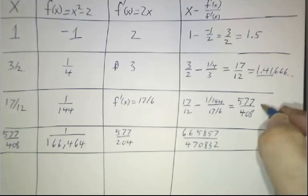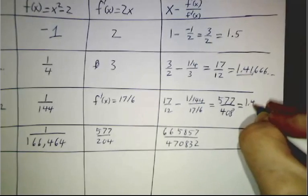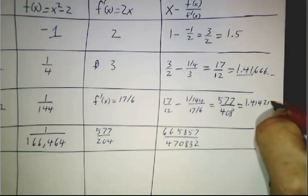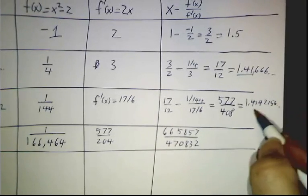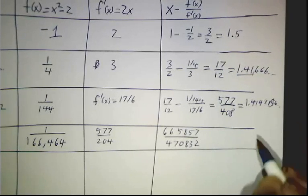The third one's not so good. This one turns out to be 1.4142156 and so on. That's good to 1, 2, 3, 4, 5 decimals. This 5 is a little bit off.